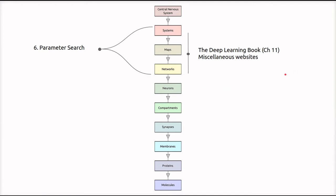Information for Parameter Search can be found in the Deep Learning Book in Chapter 11, as well as some websites that we will reference in the slides.